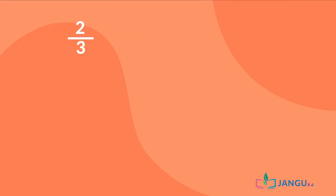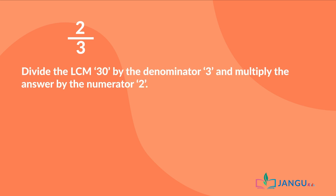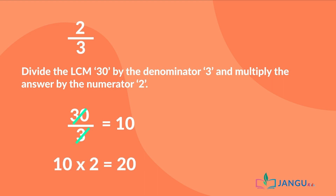So let's start with the first fraction: 2 over 3. We divide the LCM, 30, by the denominator 3, and multiply the answer by the numerator 2. 30 divided by 3 is 10. 10 times 2 equals 20. Therefore, 2 over 3 is equivalent to 20 over 30.